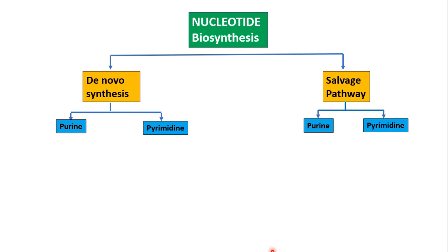The purine nucleotides are synthesized by most tissues; however, the major site is the liver. This pathway operates in the cytoplasm. During de novo synthesis, the purine ring is built upon a ribose 5-phosphate nucleus. Purine bases are not synthesized as free bases but are formed as ribonucleotides, which are later converted to deoxyribonucleotides.